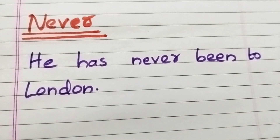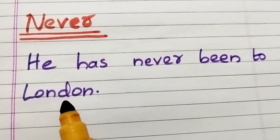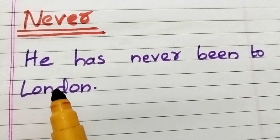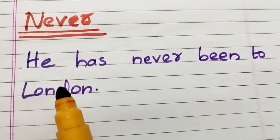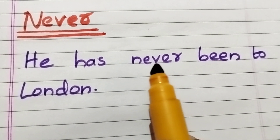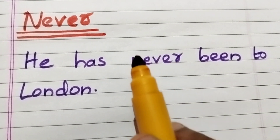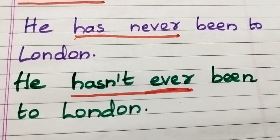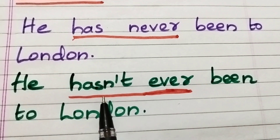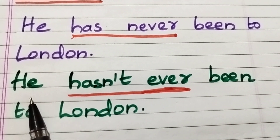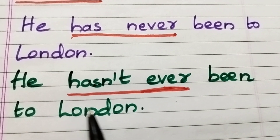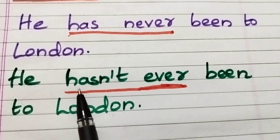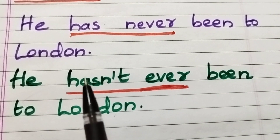'He has never been to London' is a negative sentence because it has the negative word 'never.' This sentence could also be written as 'He hasn't ever been to London,' which is also negative because it has the word 'hasn't.'